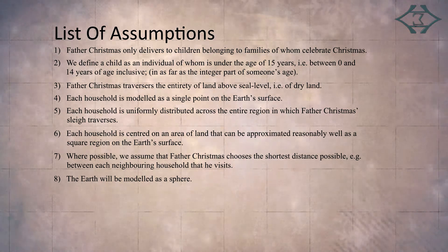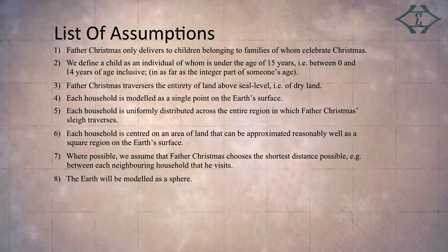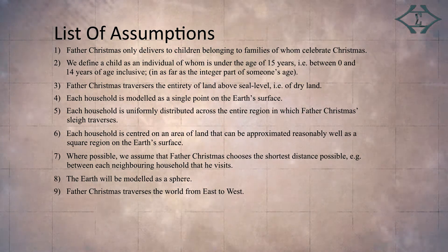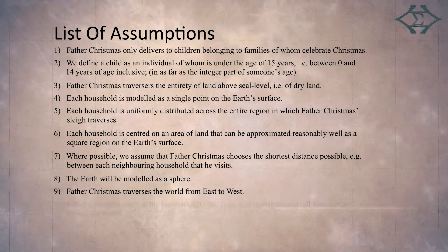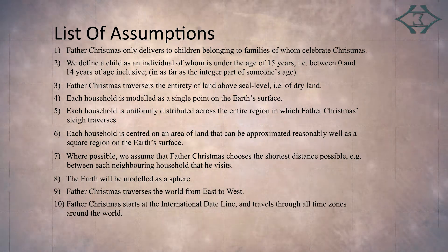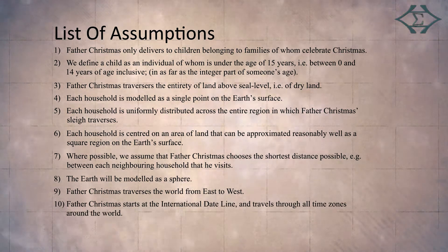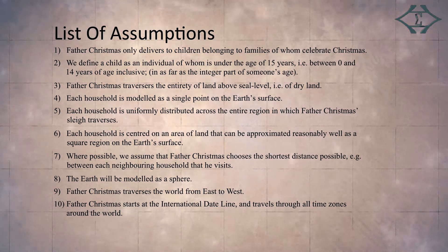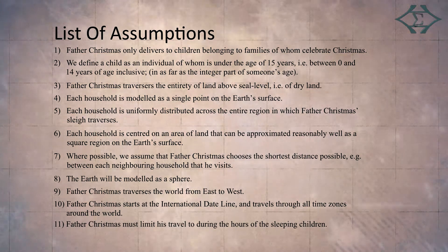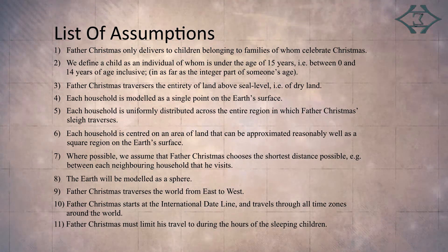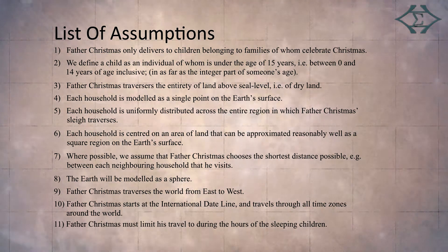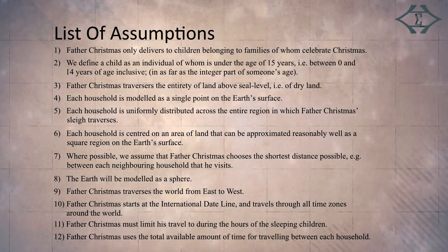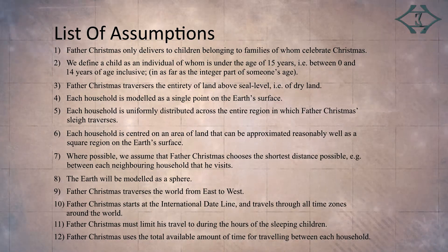Number 8: the Earth will be modelled as a sphere — sorry, Flat Earthers. Number 9: Father Christmas traverses the world from east to west. Number 10: Father Christmas starts at the International Date Line and travels through the time zones around the world. Number 11: Father Christmas must limit his travels to during the hours of the sleeping children. Number 12: Father Christmas uses the total available amount of time for travelling between each household.